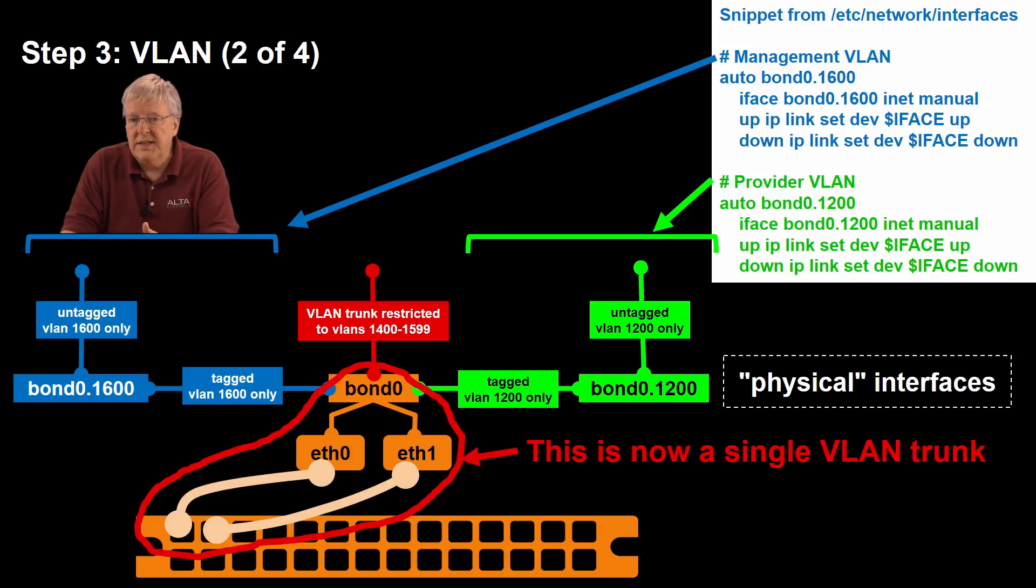So, before we get into the details of this next slide, let's understand that the connectivity from bond zero to the Ethernet switch appears as a single VLAN trunk. So, we're not so much concerned of that Ethernet zero and Ethernet one interface anymore. We're taking a look at bond zero. And in this particular case, we're going to create a new interface. And the naming of these interfaces could not be simpler. If you want, for instance, to pick up VLAN tag 1600, then name the interface bond zero.